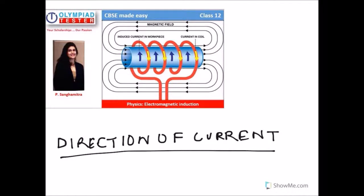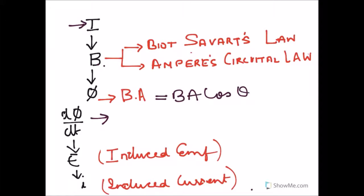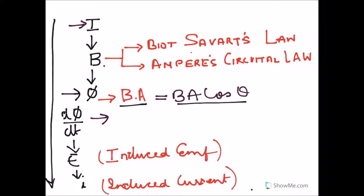This video is going to be all about direction of current. Let us look at this flowchart: current in a circuit produces magnetic field. This magnetic field strength can be given either by Biot-Savart law or Ampere's circuital law.